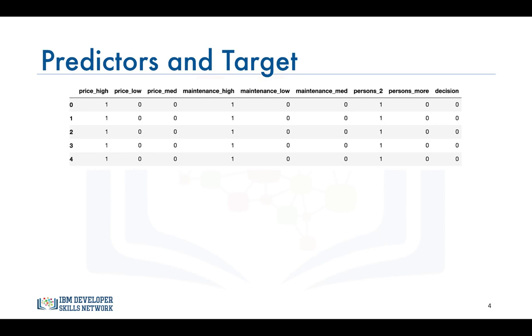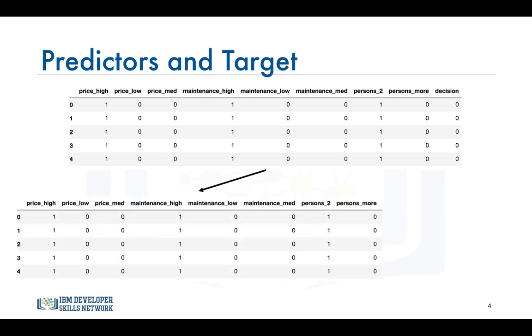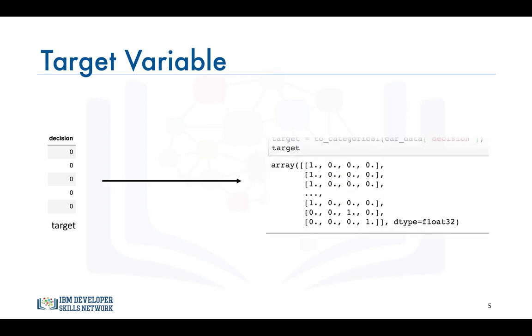Next let's divide our data set into predictors and target. However with Keras for classification problems we can't use the target column as is. We actually need to transform the column into an array with binary values similar to one hot encoding like the output shown here. We easily achieve that using the to_categorical function from the Keras utilities package.